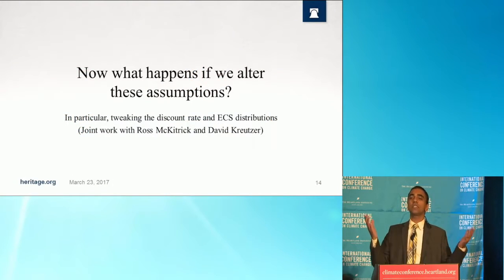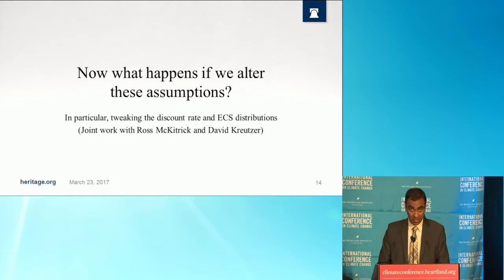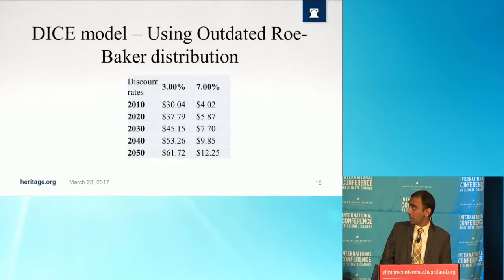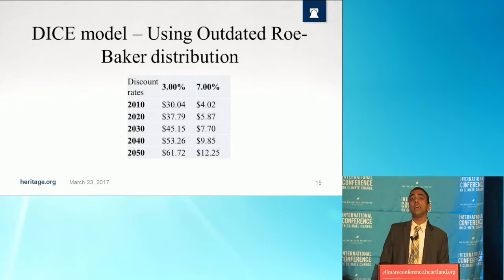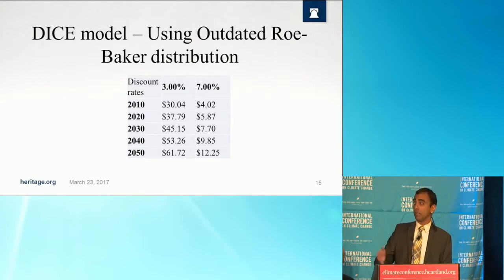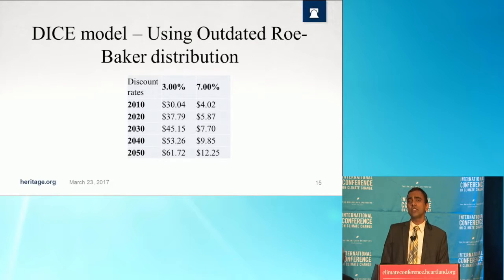So what happens if we alter the assumptions the IWG makes? In particular, we'll look at what happens if you tweak the discount rate or the ECS distribution — work joint with my colleague Ross McKittrick and David Kreutzer, who is now at the EPA. What if we were to run the 7% discount rate that the IWG ignored? Just using the outdated Roe-Baker distribution, here are the results for the DICE model. In 2020, we notice a $37.79 estimate of the social cost of carbon under a 3% discount rate, and $5.87 under a 7% discount rate.